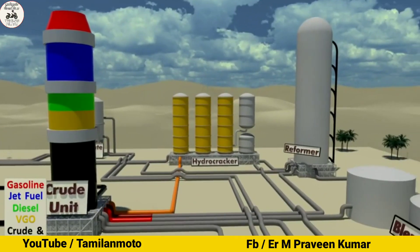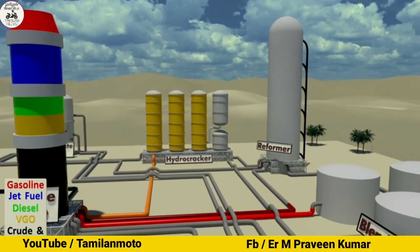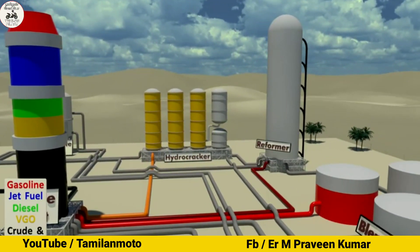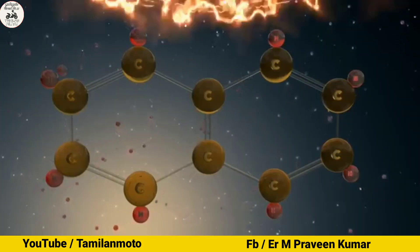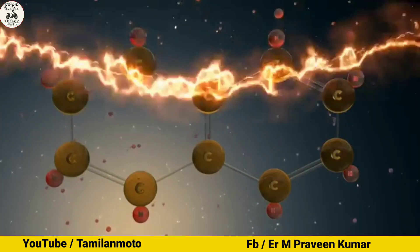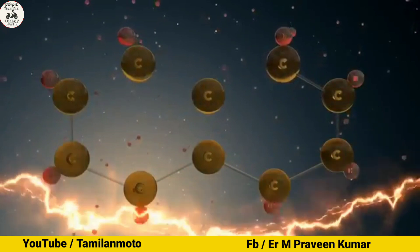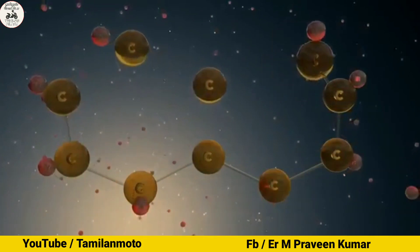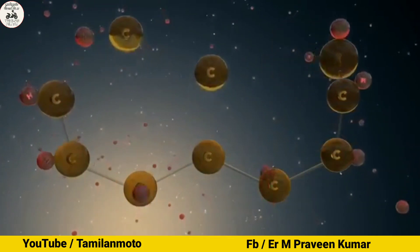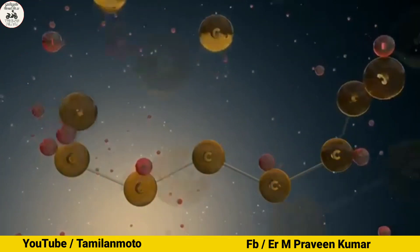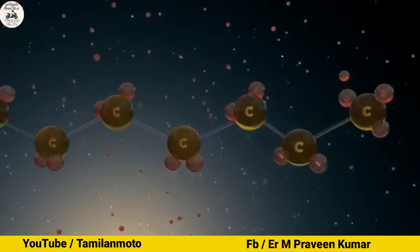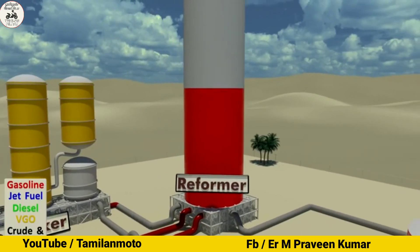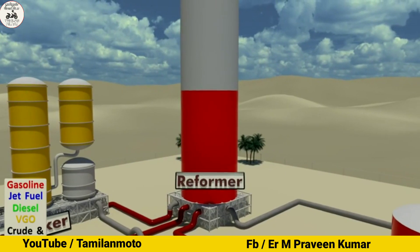This is the reformer. This is the gasoline. These are the carbon atoms. This is the structure. This is the reforming process — the reformer converts naphtha into gasoline.